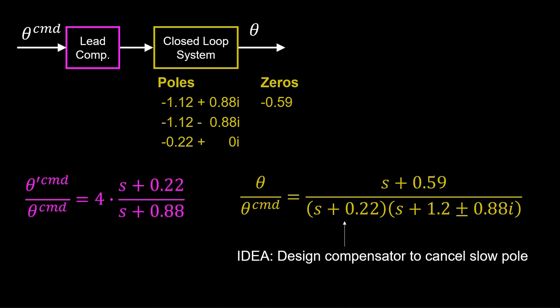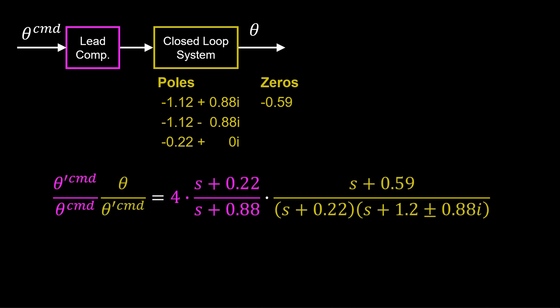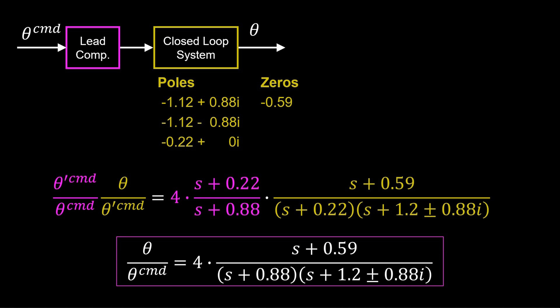Here, we select a pole four times faster at minus 0.88 and select a gain of four so that the steady state gain of the lead compensator is one. Now, through pole zero cancellation, the lead compensated closed loop response no longer has the slow pole that was in the closed loop.